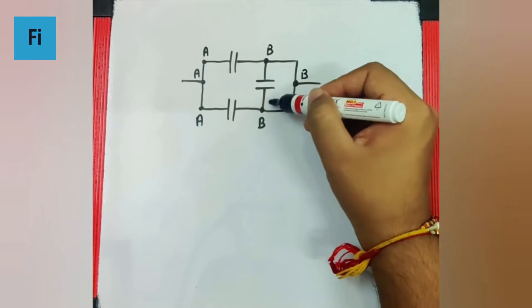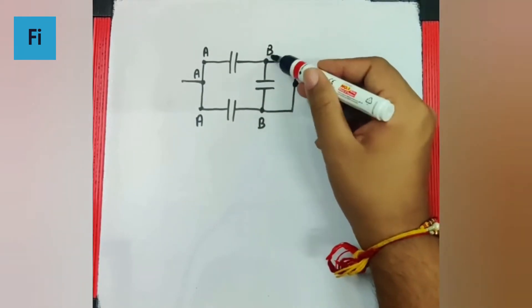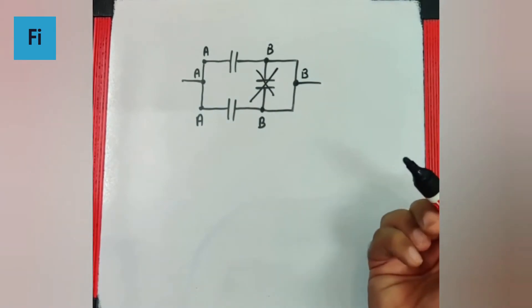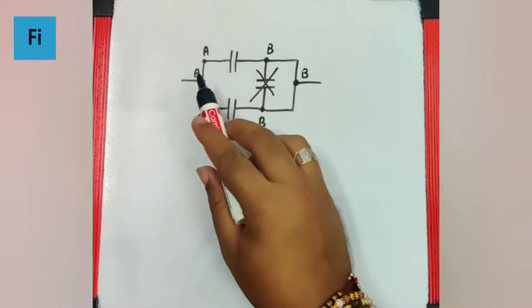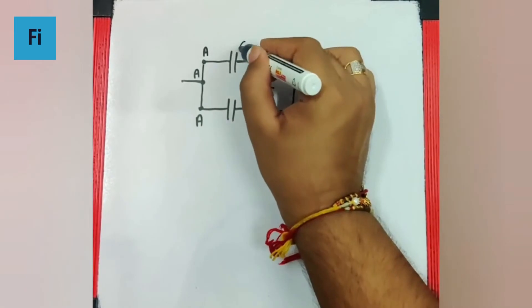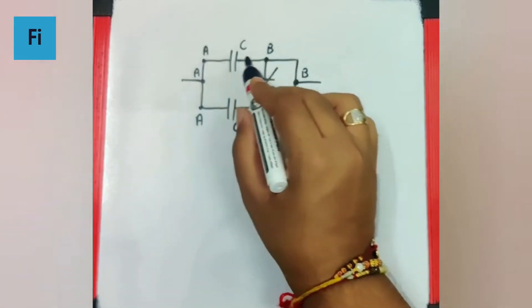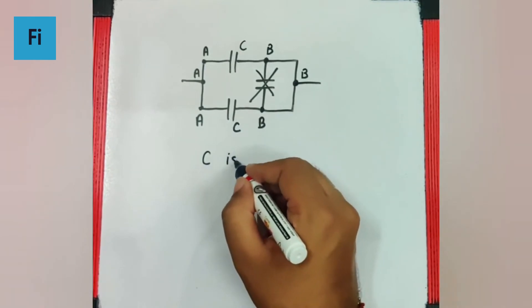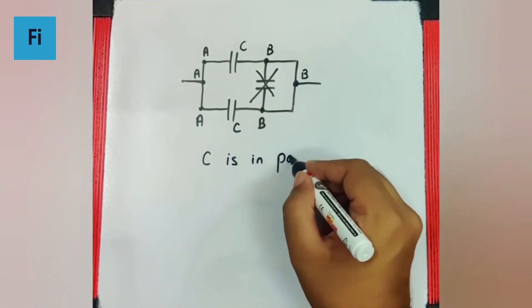Say this capacitor has both points at the same potential, which means it does not exist or it's not going to play any role. Now the two other capacitors jinki capacity C hai unke dono points same hai, meaning C is in parallel with C.